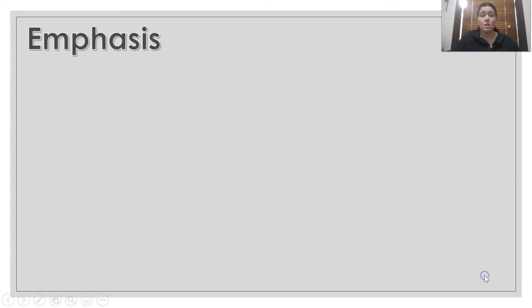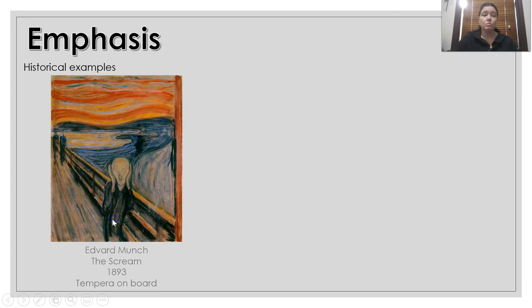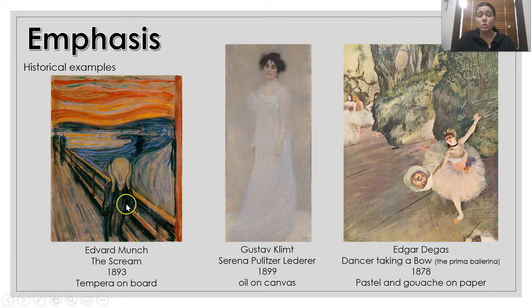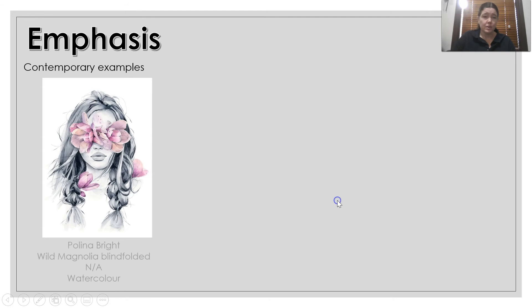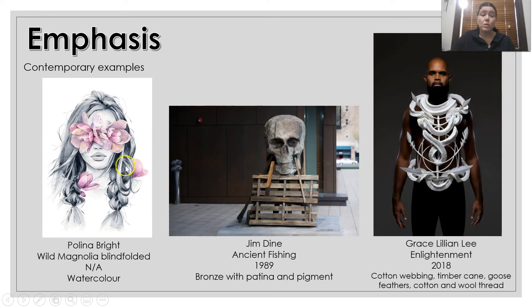Some historical examples of emphasis: Munch's work with the face — depending on your interpretation, your focal point might be the face, the background, or even the people in the background. Klimt — you've got the face with the dark hair against the white dress and white background. And the emphasis of the Degas ballet dancer in the foreground. Some contemporary examples: Bright's work with the portrait with the flowers over the eyes, Jim Dine's work with the skull, and for Grace, Lily and Lee — the beautiful body sculpture worn by the gentleman shows beautiful contrast and emphasis because your eye is immediately drawn to it.